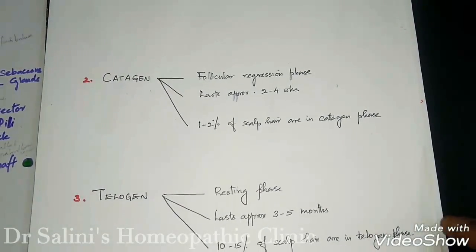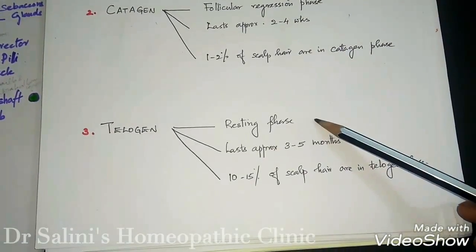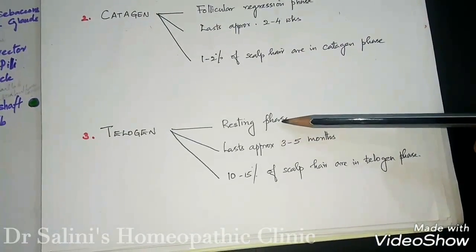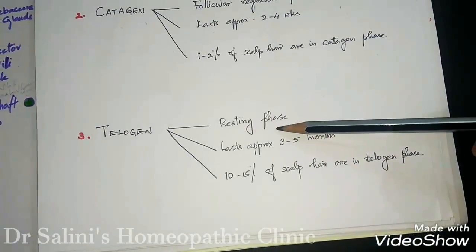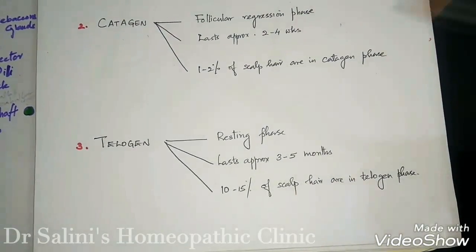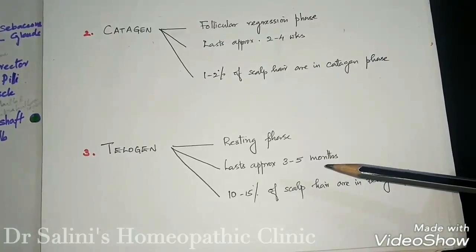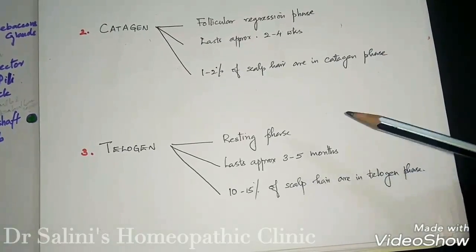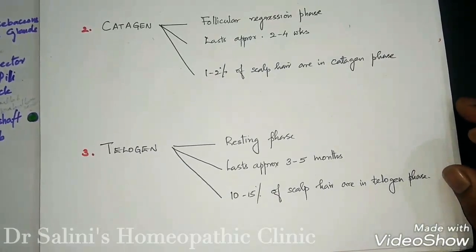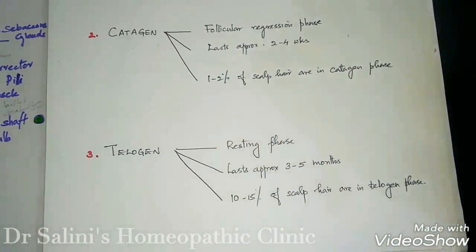The last phase is the telogen phase, which is the resting phase. In this phase, the anagen-phase hair is shed — exogenesis takes place. This lasts about three to five months, and at any given time, about 10 to 15 percent of scalp hair are in this phase.